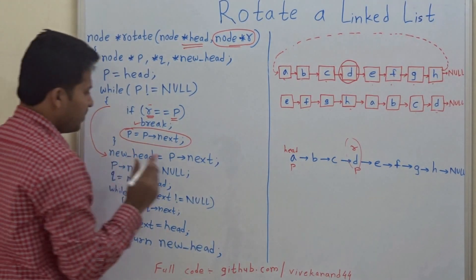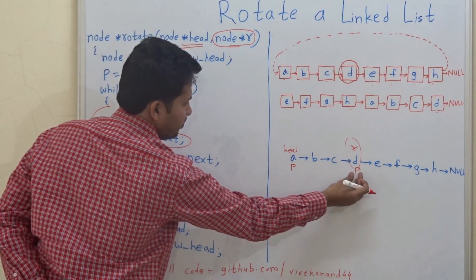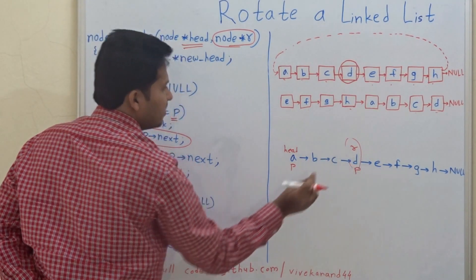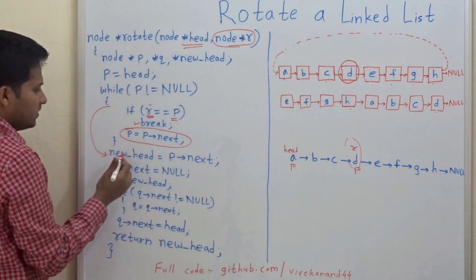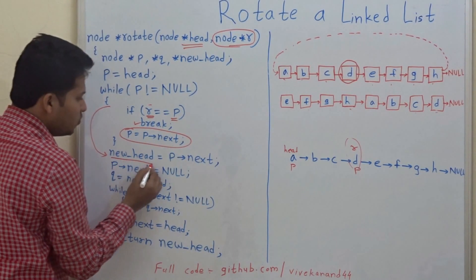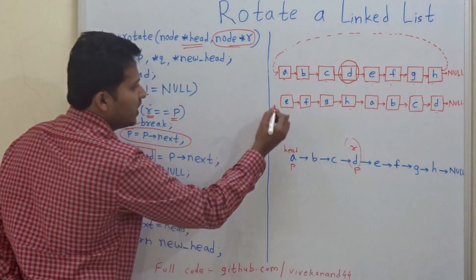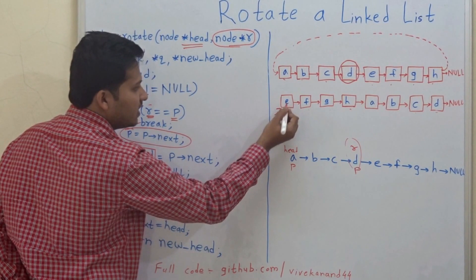And after we break, our P is positioned at R, that is the node D. So our new head, new head is this node, that is E.